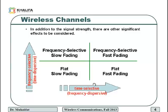This chart is key to summarizing everything, but you need to write the details under each sub-square. Coherence time is the time duration over which received signals have strong potential for amplitude correlation. Fast or slow fading refers to the rate at which the magnitude and phase of the channel are changing.